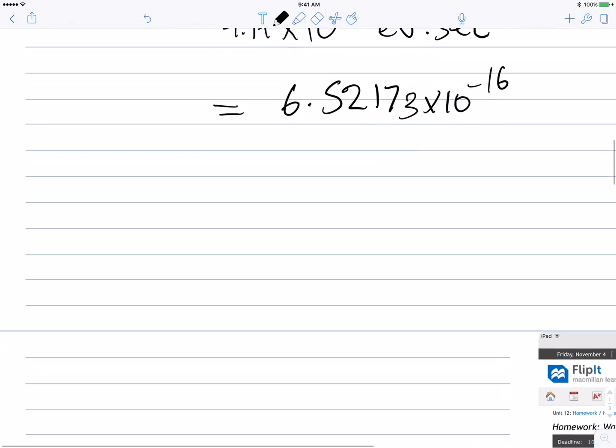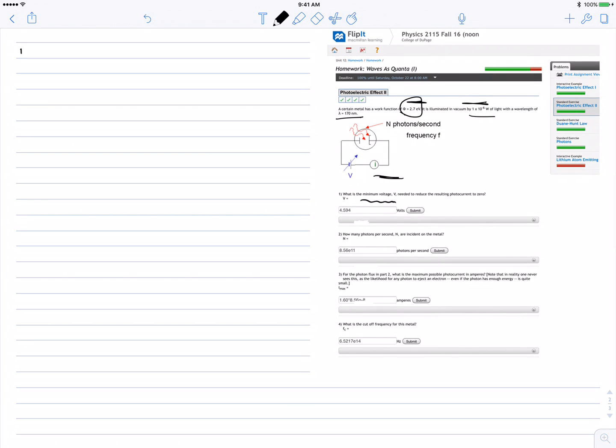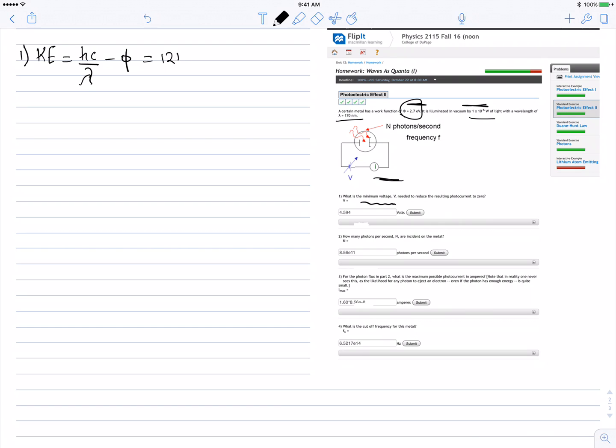So basically what we're going to do is KE equals hc divided by lambda minus the work function. That's going to be 1240 electron volt nanometers divided by 170 nanometers minus the work function 2.7 electron volts. From this I got the maximum kinetic energy: 4.59 electron volts.